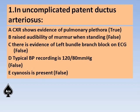Raised audibility of the murmur when standing — the PDA murmur, which is typically described as a machinery murmur or continuous murmur, doesn't alter during posture. There is evidence of left bundle branch block on ECG — this is a false statement. What you will usually see is a left ventricular type of hypertrophy, seen as positive QRS complex in lead 1 and negative QRS complex in AVF, negative deflection in V1, and positive deflection in V6. There is no bundle branch block seen in PDA. Bundle branch block type ECG is seen in ASD ostium secundum, and that too beyond age 4 or 5 when there is right ventricular dilatation.